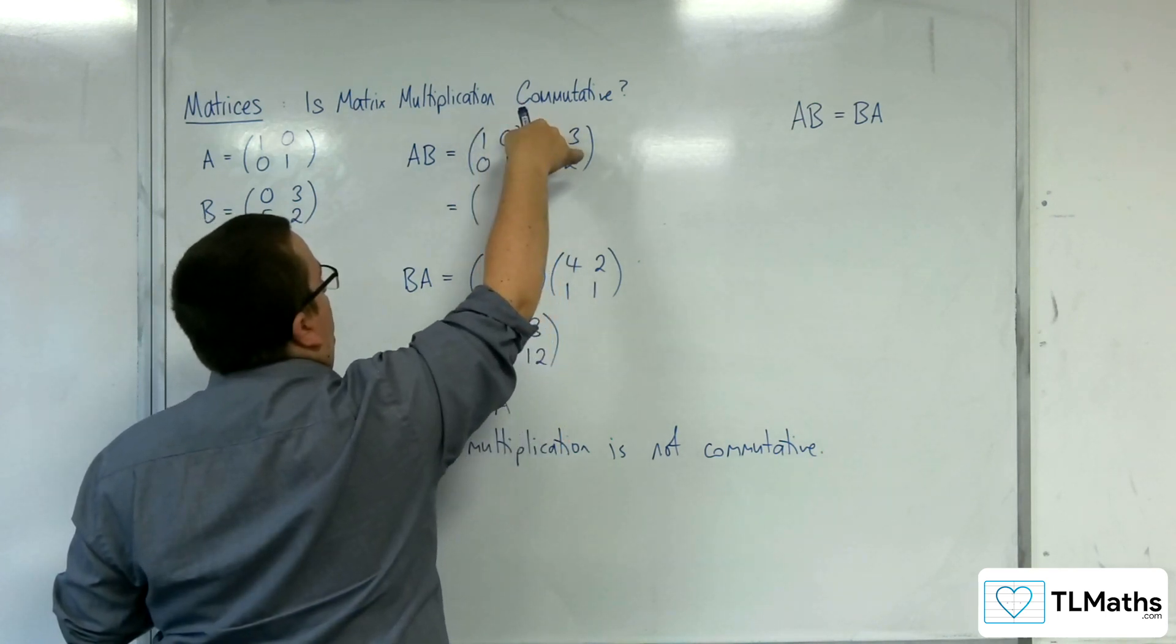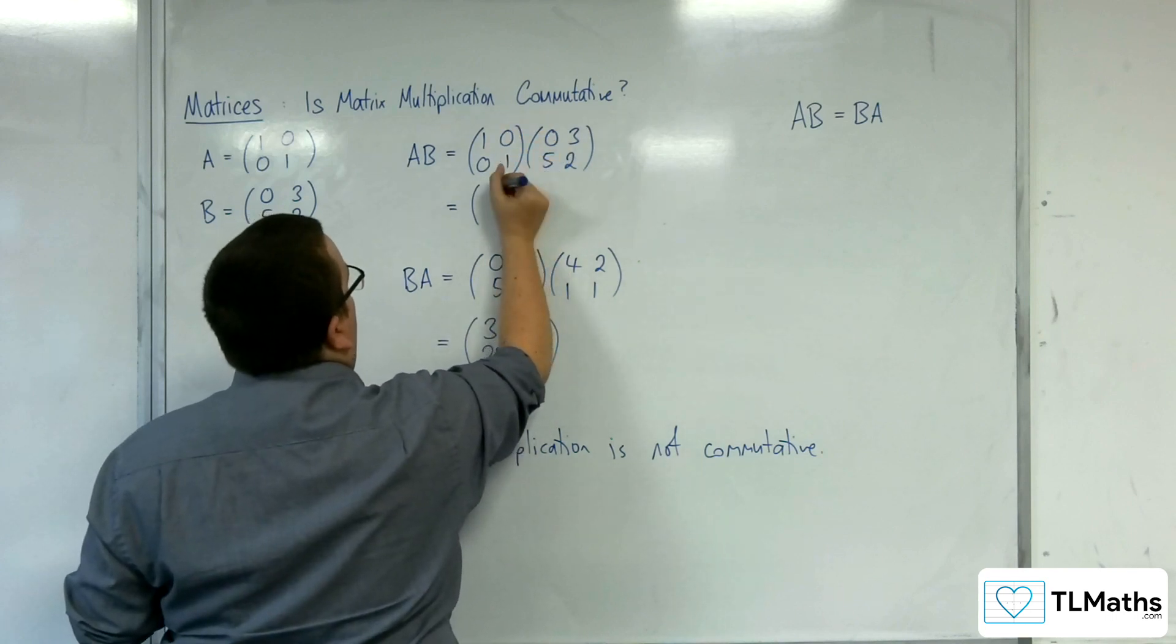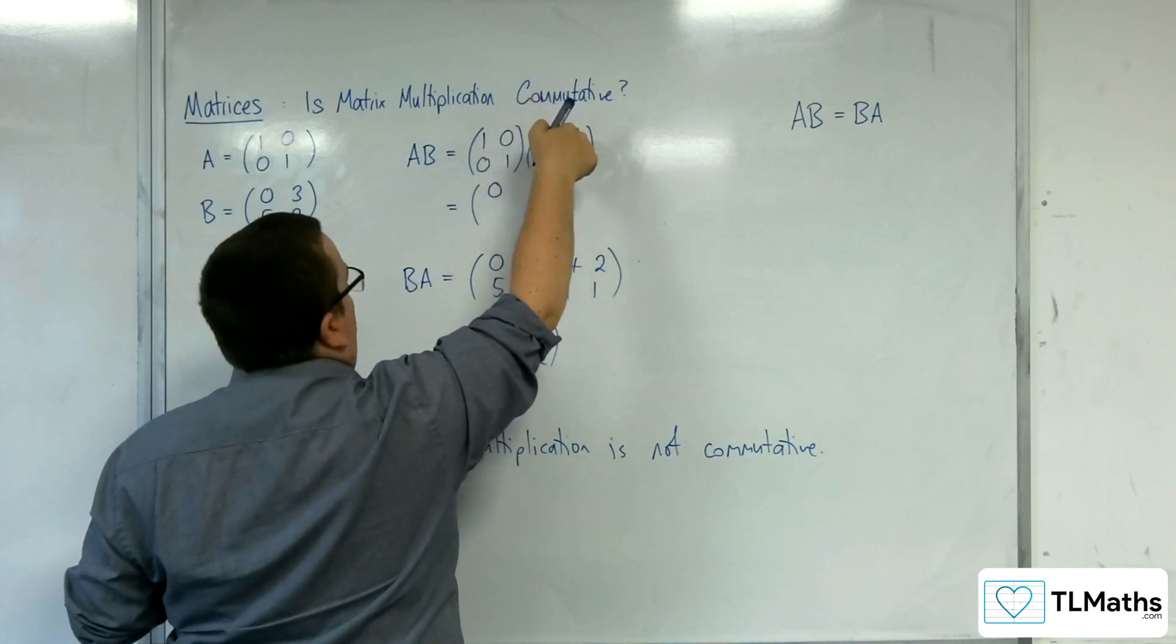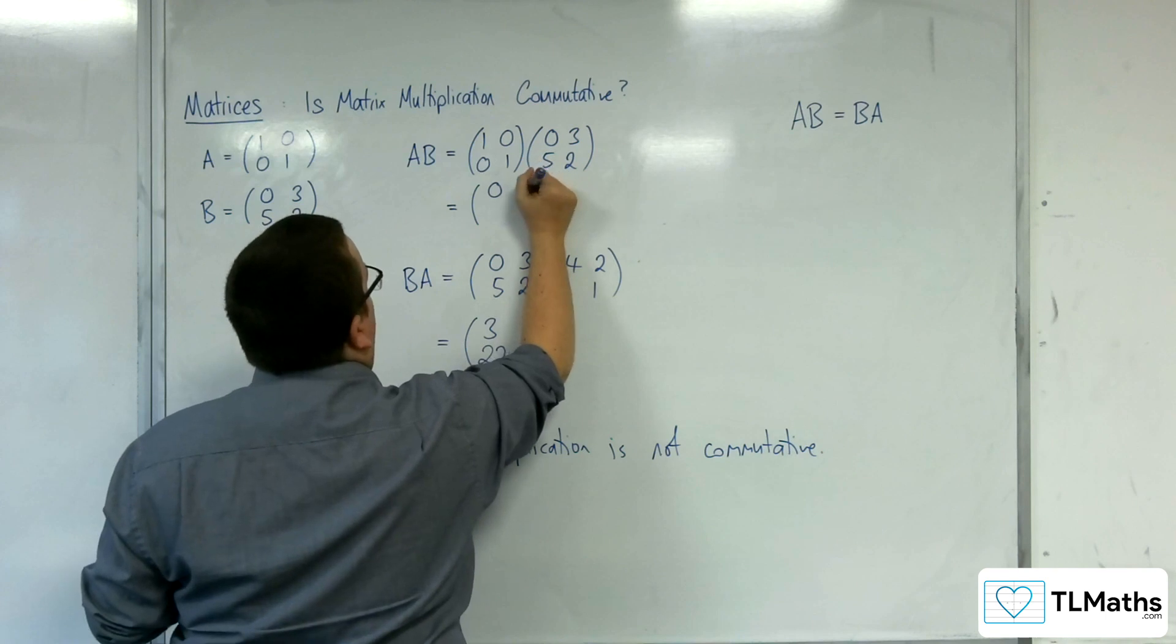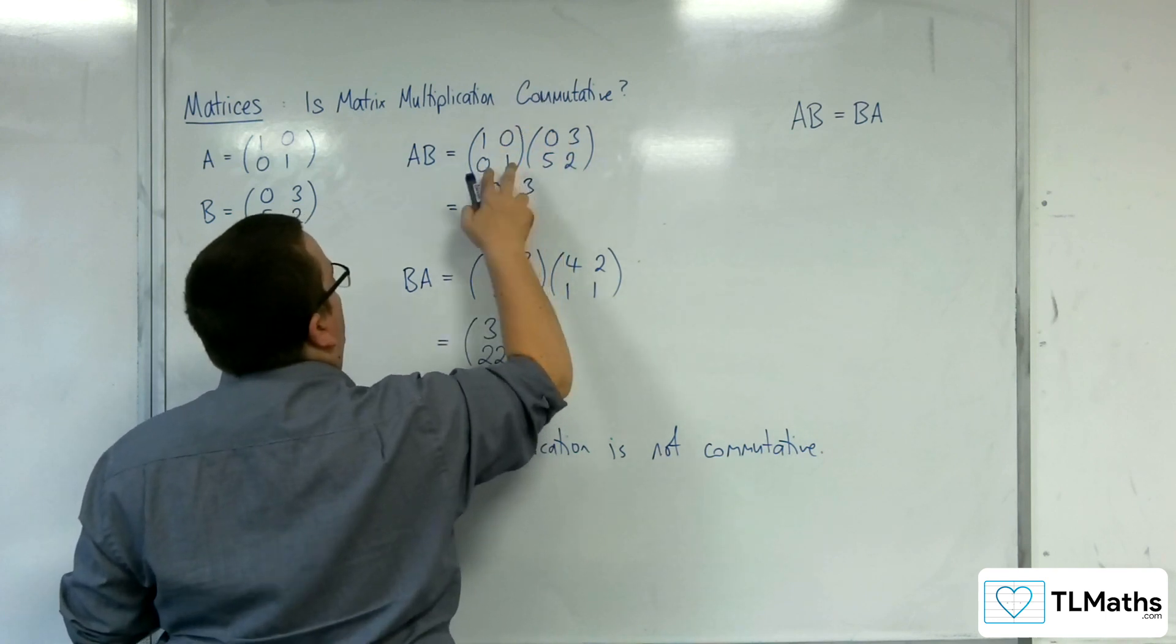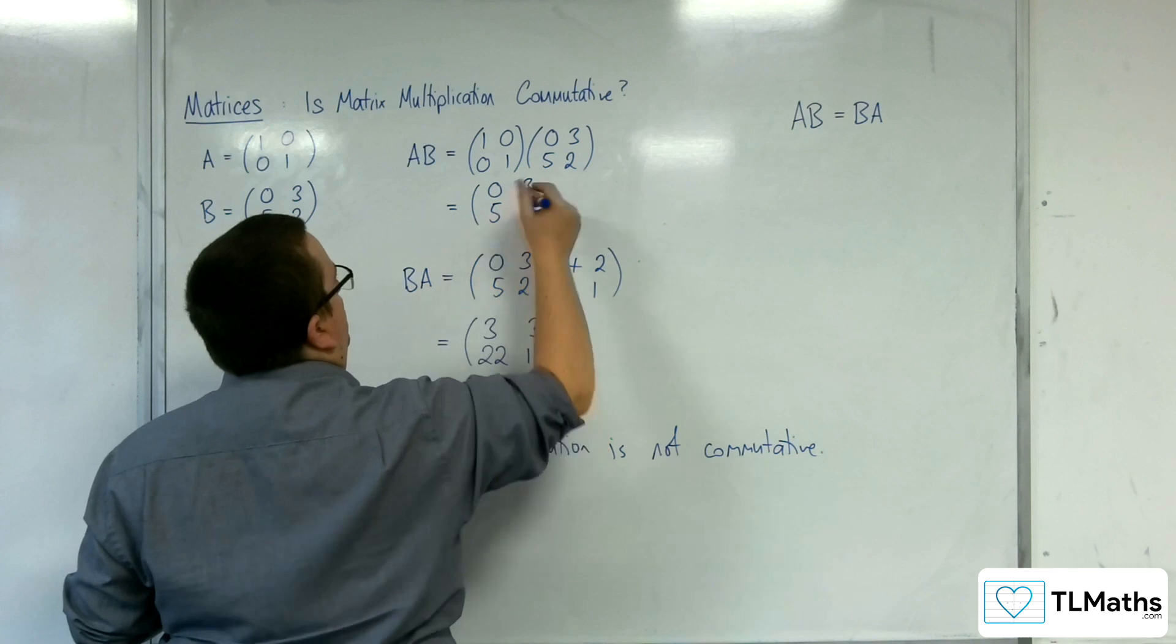So we would have 1,0, 0,1 times 0,5, which is 0. 1,0 times 3,2, which will get you 3. 0,1 times 0,5, which is 5. 0,1 times 3,2, which is 2.